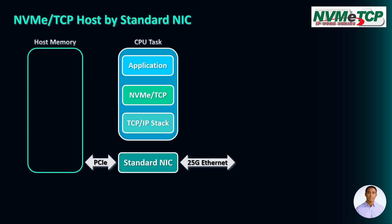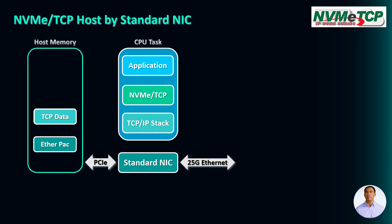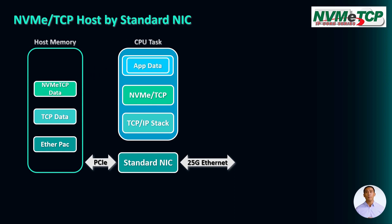Here is an example of how the NVMe TCP host function works when implemented by a standard NIC. The standard NIC receives Ethernet packets from a 25G Ethernet connection and stores them in the host memory via a PCIe interface. Then the CPU executes the TCP/IP stack to extract the TCP payload data from the Ethernet packet and store it in the host memory. Next, the CPU operates the NVMe TCP feature to decode the NVMe TCP data from the TCP payload data and store the result in the host memory. Finally, the application running on the CPU can read and execute the output data of the NVMe TCP function, with the resulting data stored in the host memory.